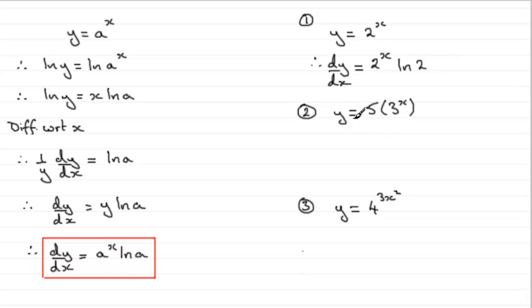Now, I picked this example just so that we had a number in front of our a to the power x. Don't fall into the trap of thinking that this is 15 to the power x. It's just going to be, when it comes to differentiating it, 5 times the result of differentiating 3 to the power x. So, it's going to be 5 times 3 to the power x, then multiplied by the natural log of 3.